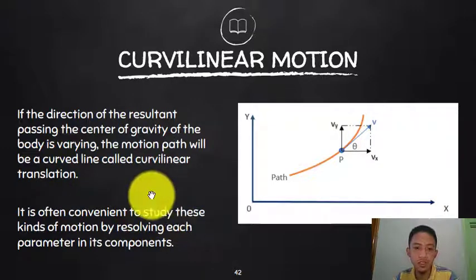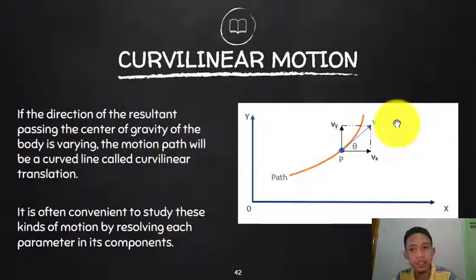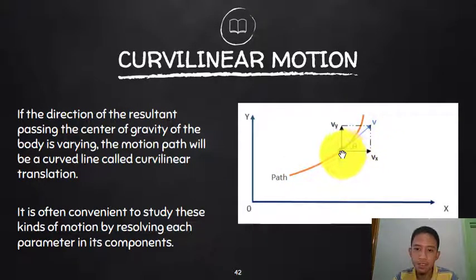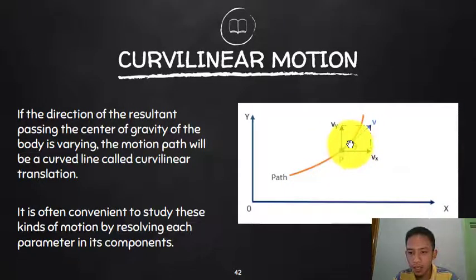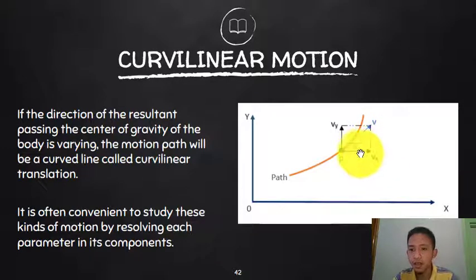It is convenient to study curvilinear motion by resolving each parameter into its components. For example, at point P on a curved path, you have a specific velocity. The velocities at different points are tangent to the curve, so their angles with respect to horizontal or vertical differ at every point. To find the direction of velocity, we break it down into horizontal and vertical components.